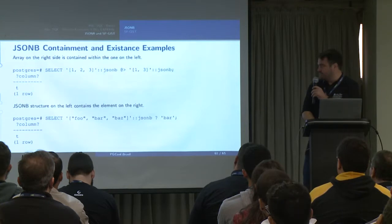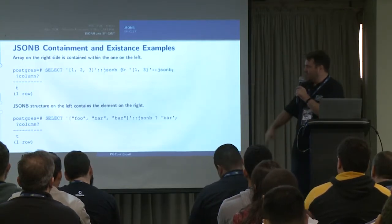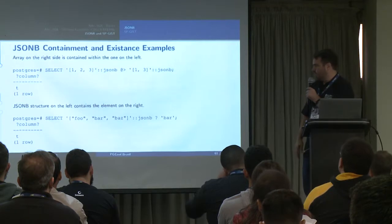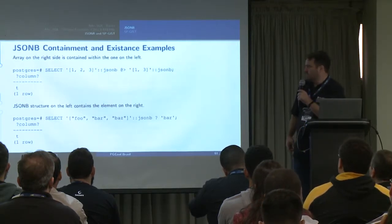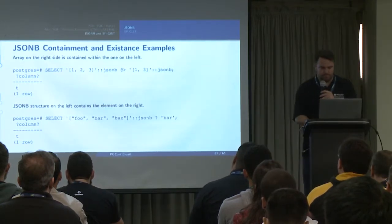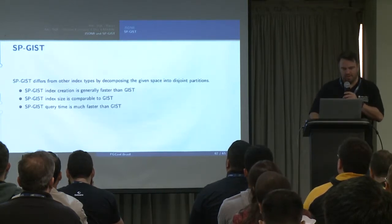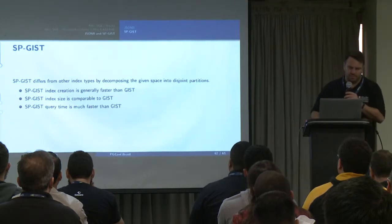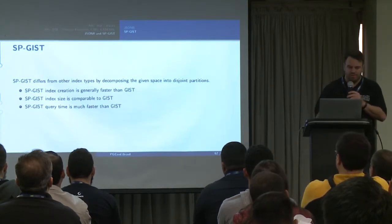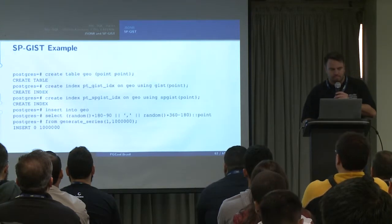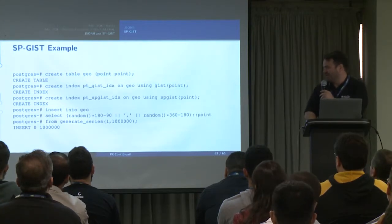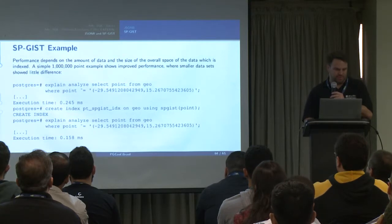Here's an example of containment and existence with JSONB: you can say this JSONB has to contain that, which returns a Boolean — true. You can also check on an individual element basis whether a JSONB contains a specific element. SPGIST — space partition GIST — is a different type of GIST index that decomposes the space into disjoint partitions and can be a little bit faster than GIST. That's an example of creating a spatial GIST index across a point table.